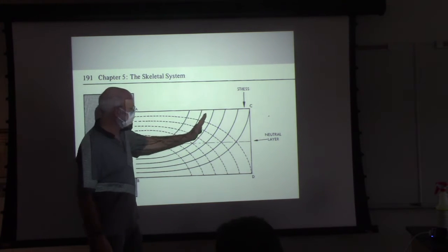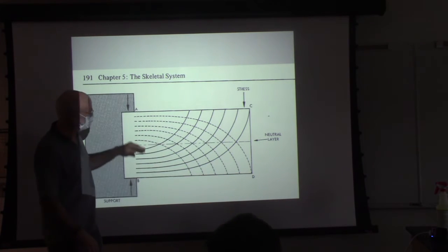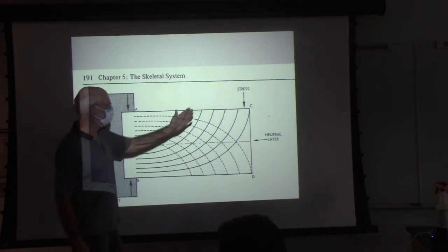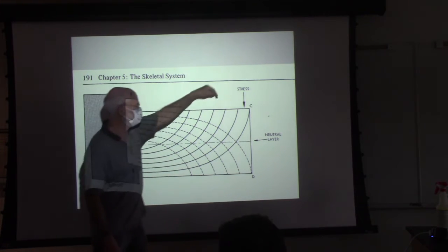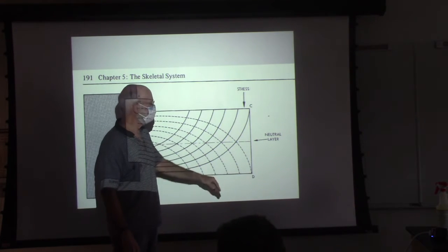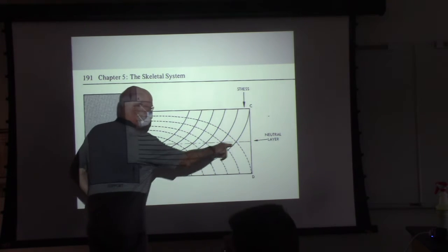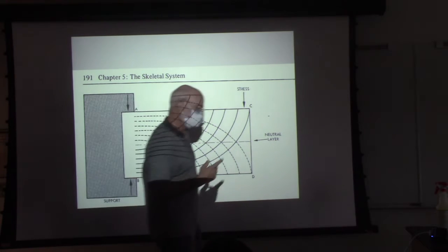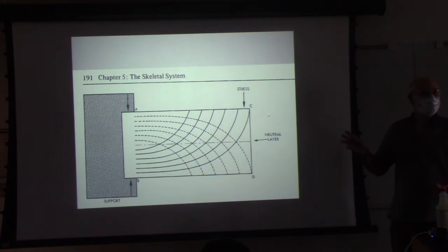These right here are tolerating compression, and these that are going in that way are tolerating tension when there's force being applied at one end. So there's the stress being applied right there, and then these things are resisting that. And then the resolution of those is that neutral layer.